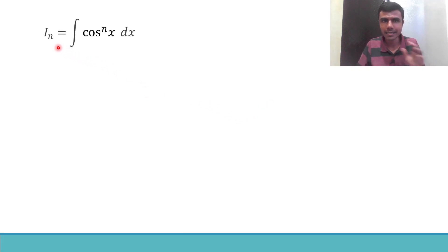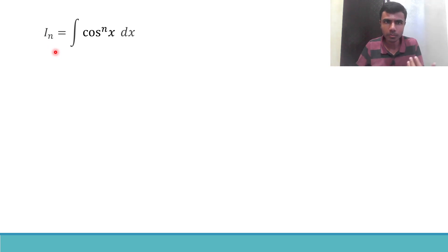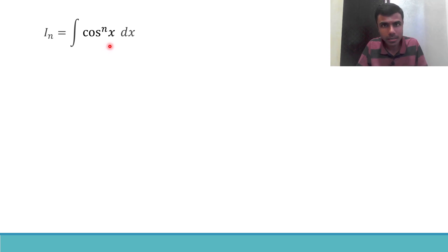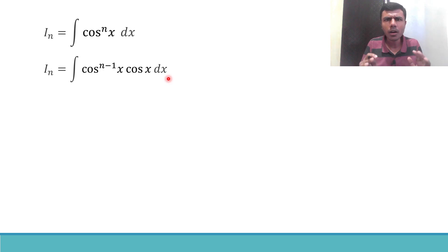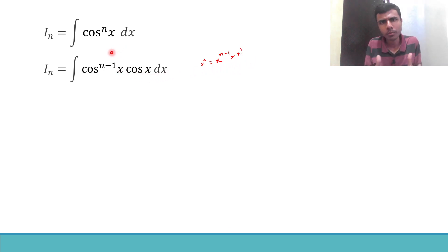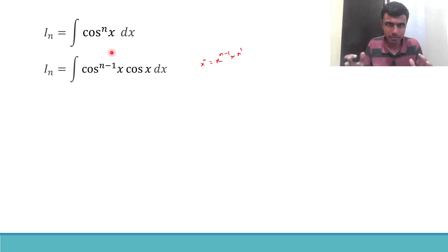First, take the given integral as I_n. I_n is nothing but the integral of cos^n x dx. Since the power is n, I took I_n. If the power were n minus 1, it would be I_(n-1); if the power is n minus 2, it would be I_(n-2). Keep this in mind — I'm going to use it at a later stage. Now, cos^n x can be written as cos^(n-1) x times cos x, because x^n = x^(n-1) · x^1, and similarly cos^n x = cos^(n-1) x · cos x.